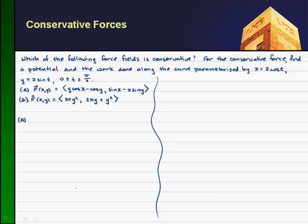For our force f, which we'll write as some vector with components p and q, we have y cosine x minus cosine y, and we have sine of x minus x sine y. So this is my p of x, y, and this is my q of x, y.